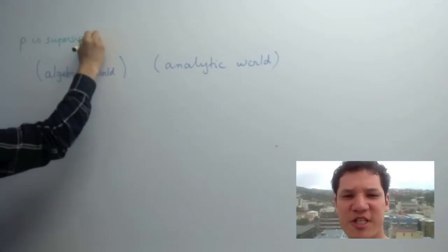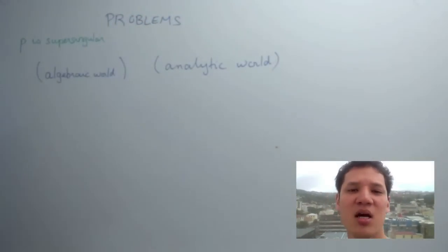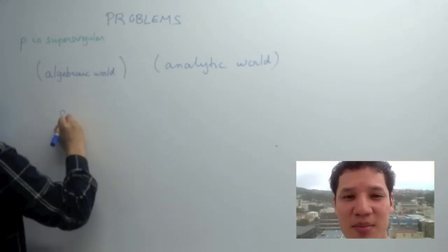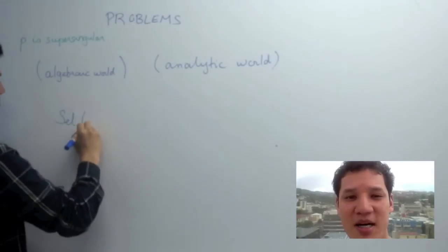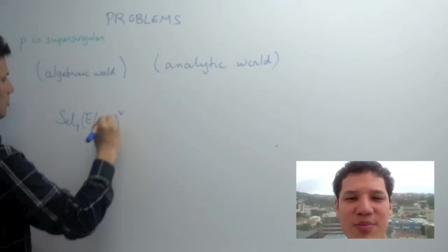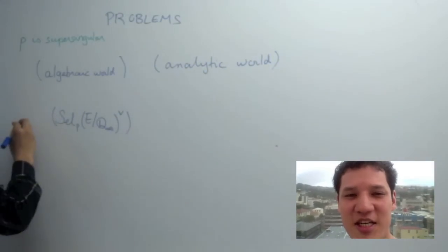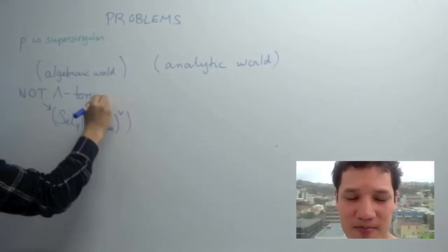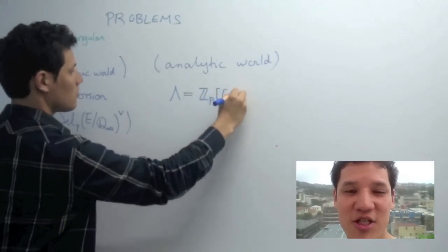When p is supersingular, several problems occur. On the algebraic side, our problem is that the p-primary part of the Selmer group we kept talking about before has a Pontryagin dual that's not finitely generated torsion as a lambda module. Recall that lambda is ZP double adjoint X.